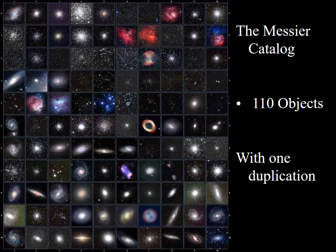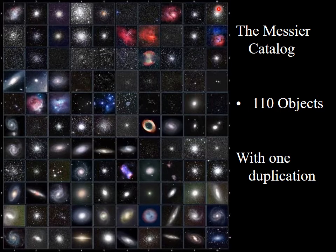We label objects in the Messier catalog by their number. Messier one is the first object, then Messier two, Messier three, and so on — Messier nine, Messier ten, Messier eleven, and so forth.